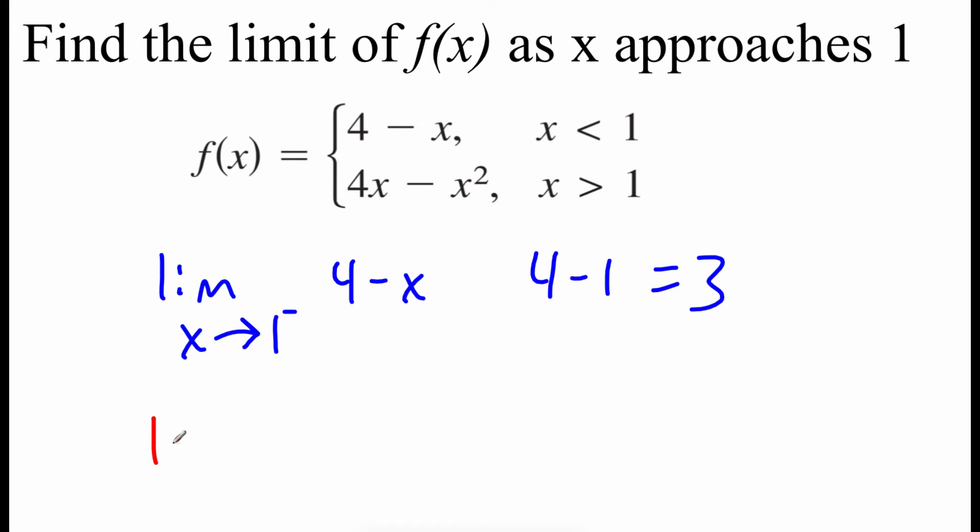Then we're going to look at this limit as x approaches 1 from the right-hand side. So now we'll have to look at the other piece of our function. So 4x minus x squared. And again, we can use direct substitution here. We can just plug in 1 for our x values. So we've got 4 times 1 minus 1 squared. Well, 4 times 1 is 4 minus 1, we get 3. Since we ended up with the same number as we approached 1 from the left and the right-hand side, then we would say the limit of this function as x approaches 1 is 3.